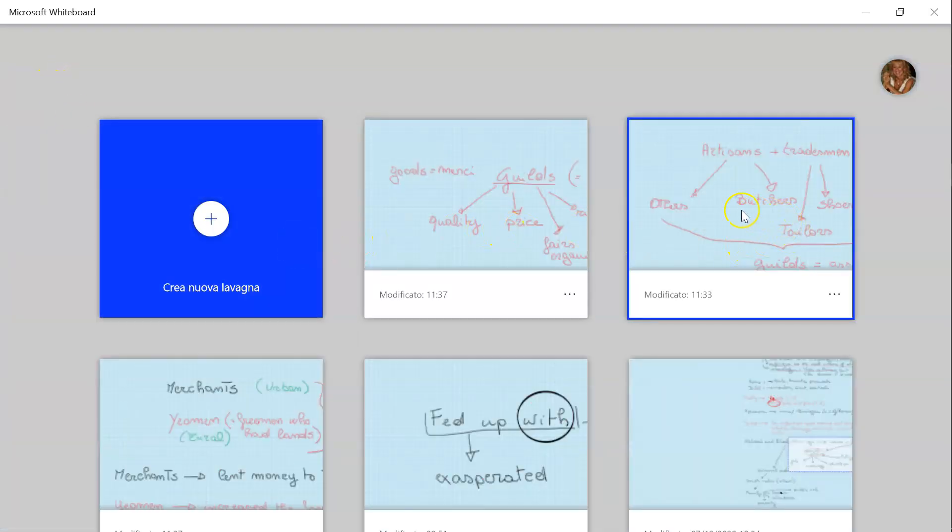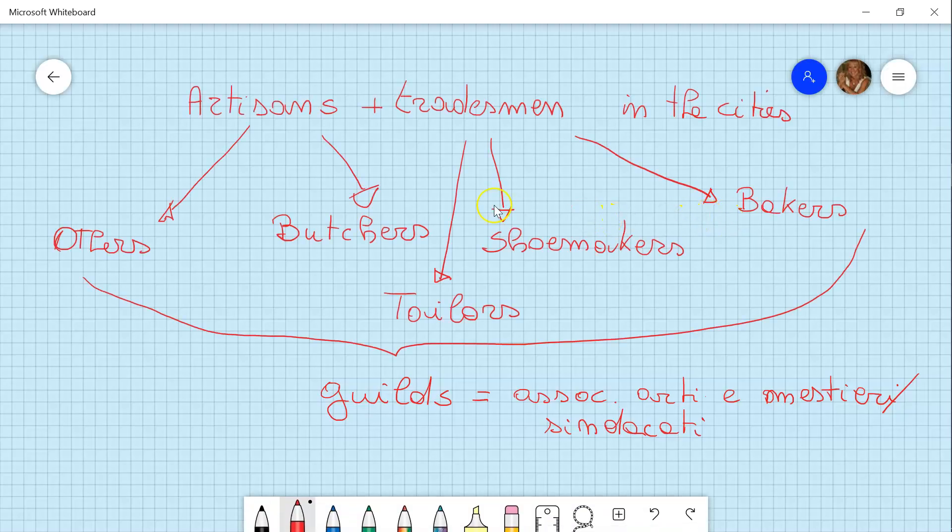Then we saw that the artisans and traders in the cities were, for example, butchers, shoemakers, bakers, tailors and many others. These were the artisans and they started to organize themselves in guilds, which were association of different categories. So there was the guilds for the butchers, the guilds of the tailors, the guilds of the shoemakers and so on.